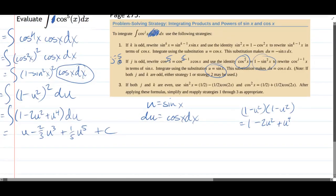And now we have to unsubstitute, come back into x's. So u is sine minus two-thirds sine cubed plus one-fifth sine to the fifth plus constant. And that is our anti-derivative.